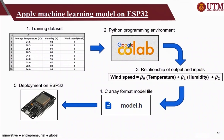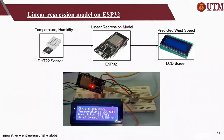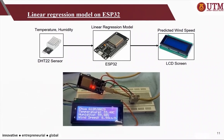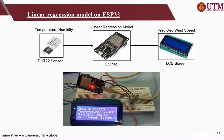So, how can we do TinyML? As mentioned, machine learning allows computers to learn from data. To apply the machine learning model, we need to train it with a dataset consisting of readings of temperature, humidity and resulting wind speed. The model will be trained in a Python programming environment to find the relationship between the output and the inputs. Then, the model will be converted into a C-array file and deployed on the ESP32 microcontroller. After deployment, the microcontroller will be able to make wind speed predictions based on temperature and humidity readings from the DHT22 sensor and display the results on the LCD screen, as shown in the video.